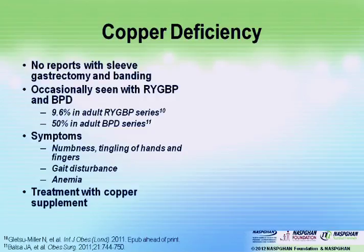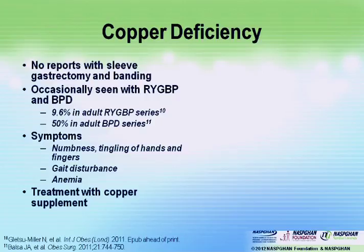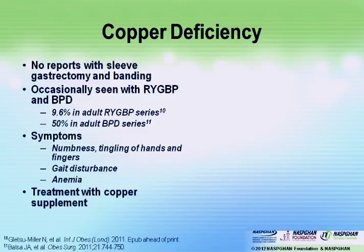Copper deficiency has been associated with sideroblastic anemia and neutropenia. There have only been about three or four cases in pediatrics, but there are probably others that nobody has looked for since the symptoms are relatively vague. Symptoms of copper deficiency include numbness and tingling of the hands and fingers, a gait disturbance, and anemia — classically sideroblastic anemia, because copper competes with iron and causes a change in red cells. Copper requires a slightly acid environment; it's taken up by the Menkes protein and competes with zinc, so someone who overdoses on zinc thinking it's great for colds can become copper deficient. Treatment is copper supplementation.